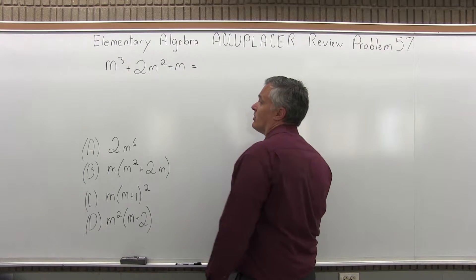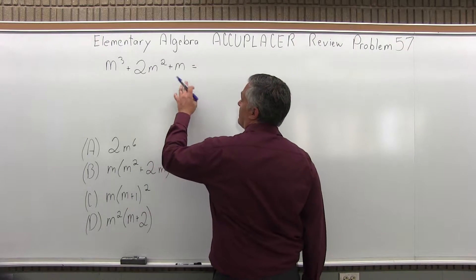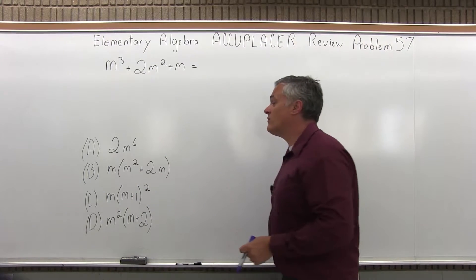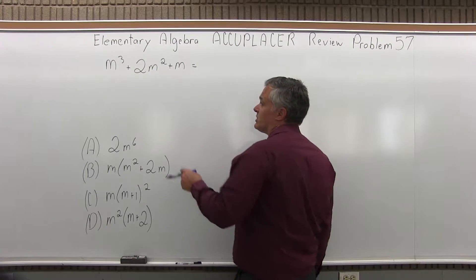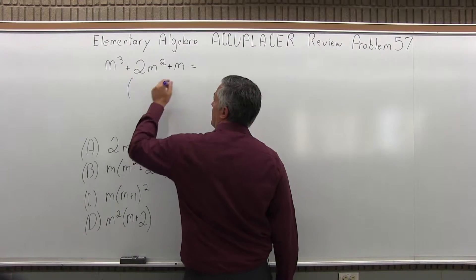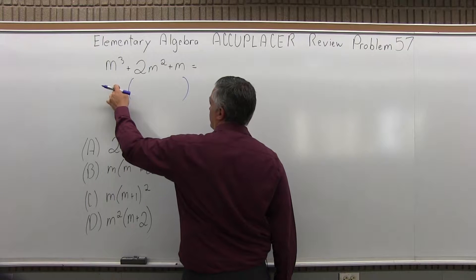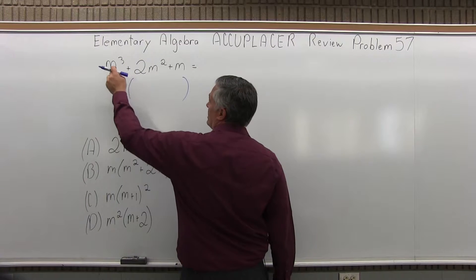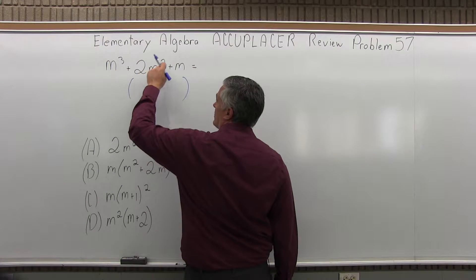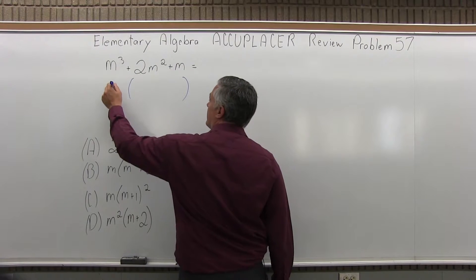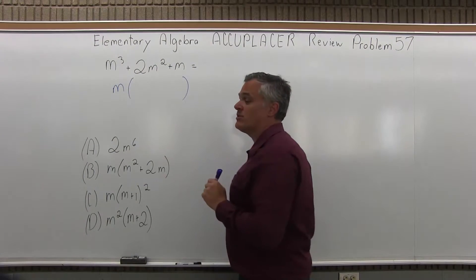We have m to the third plus 2m squared plus m equals which one of the given four options? So what we want to do is have some parentheses, something in front and something inside. So I have m cubed, m squared, m. Each one is something times m. So I can put an m in front of the parentheses.